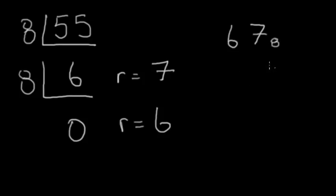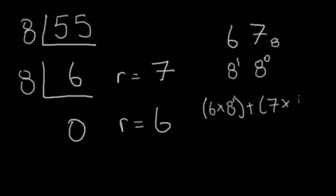And so, to double check that, this is 8 to the 0 power, and this is 8 to the 1st. And to turn that into decimal, so we have 6 times 8 to the 1st, plus 7 times 8 to the 0. So 6 times 8, that's 48, plus 7, and that's 55.